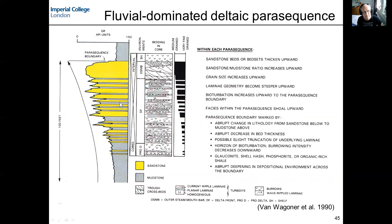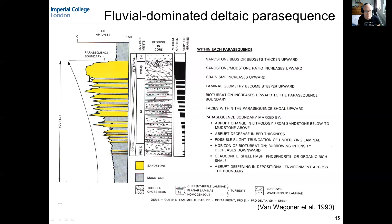The mudstones in between can also be deposited rapidly and can have patchy bioturbation. This upward-coarsening succession records a change from relatively deep conditions away from the river mouth to progressively shallower conditions close to it, then across a flooding surface back to relatively deep-water distal conditions. This is an example of a fluvially dominated deltaic parasequence with a flooding surface on top.